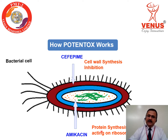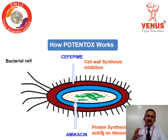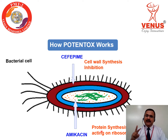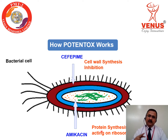The second component is amikacin, which inhibits protein synthesis — it does not allow the bacteria to produce protein by acting on the ribosome. When we look at the mechanism of action, both antibiotics are acting on different target sites on the same bacterium. This ensures excellent synergy between cefepime and amikacin in Potent Talks.